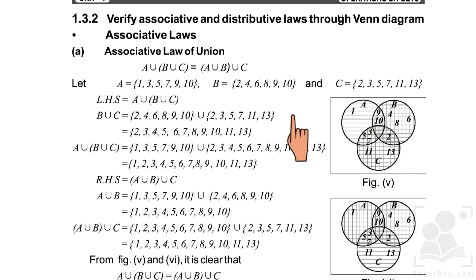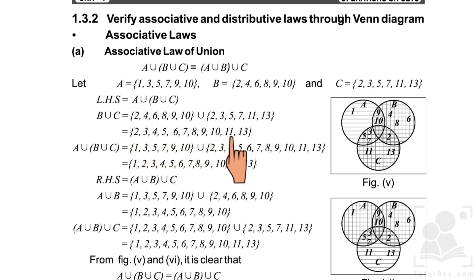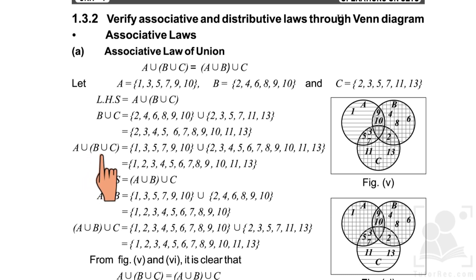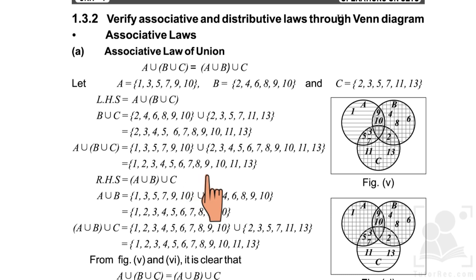To prove the left-hand side, we first find B union C, which gives 2, 3, 4, 5, 6, 7, 8, 9, 10, 11, and 13. This is represented with vertical lines. Then we find A union (B union C), which gives 1, 2, 3, 4, 5, 6, 7, 8, 9, 10, 11, and 13 — all elements represented with vertical lines. In B and C sets we have double lines because union was computed twice: first B∪C with vertical lines, then its union with A using horizontal lines.